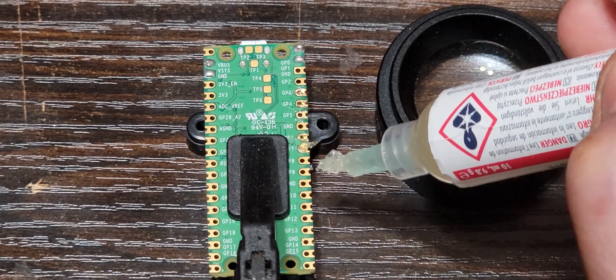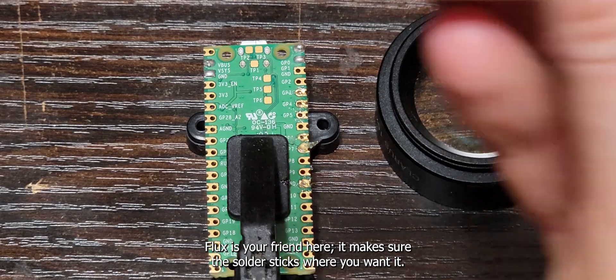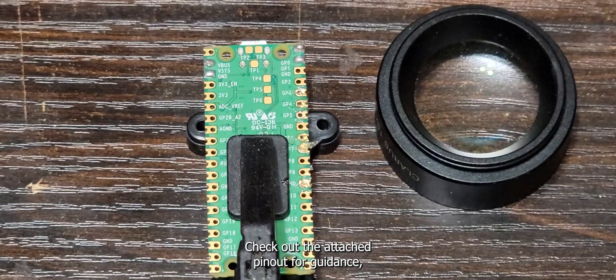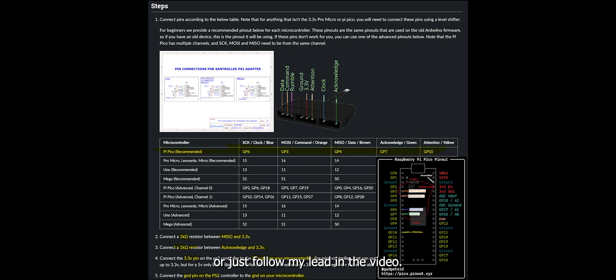Now for some soldering action. Flux is your friend here. It makes sure the solder sticks where you want it. Check out the attached pinout for guidance or just follow my lead in the video. Don't forget, you'll need 2x1000 ohm as shown on the Pinouts and Santroller website.